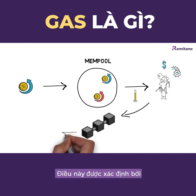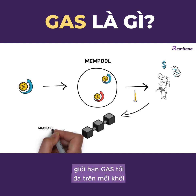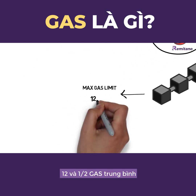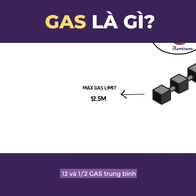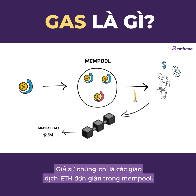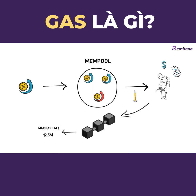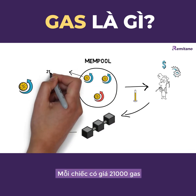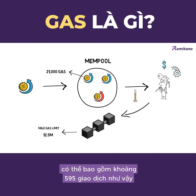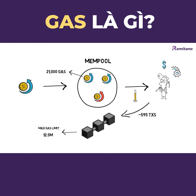Miners are also limited in how many transactions they can include in one single block, determined by the maximum gas limit per block. At the time of creating this video, this limit is set to 12.5 million gas. As a quick example, if there are only simple ETH transactions in the mempool each costing 21,000 gas, a miner can include around 595 such transactions.